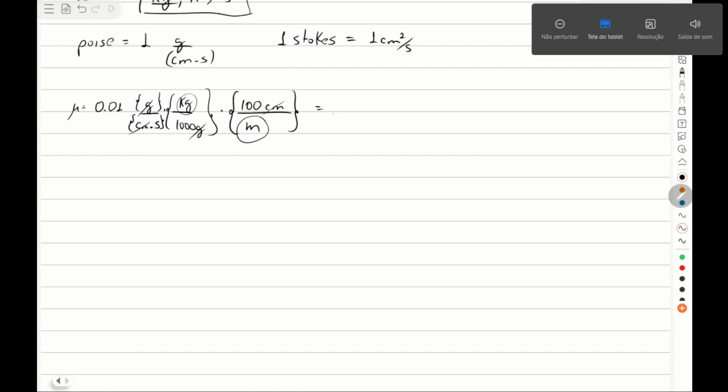So the result is that the viscosity in the International System will be 0.001 kilogram per meter second. And that is our answer for absolute viscosity.